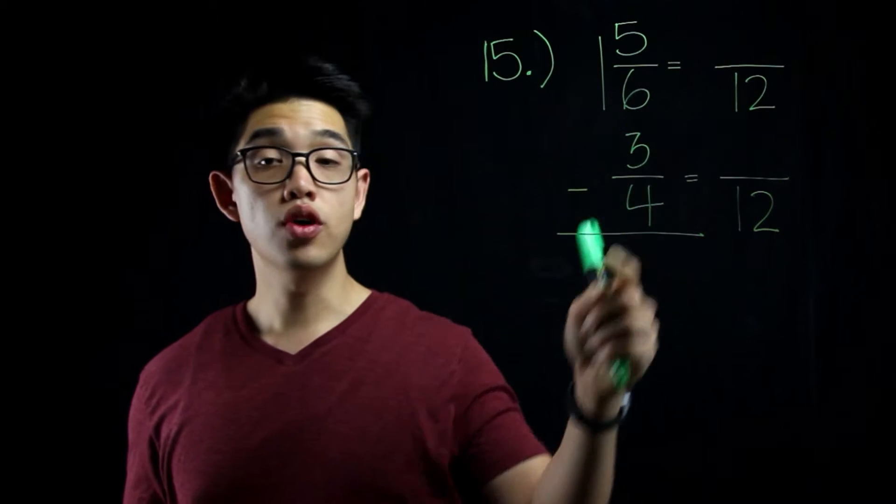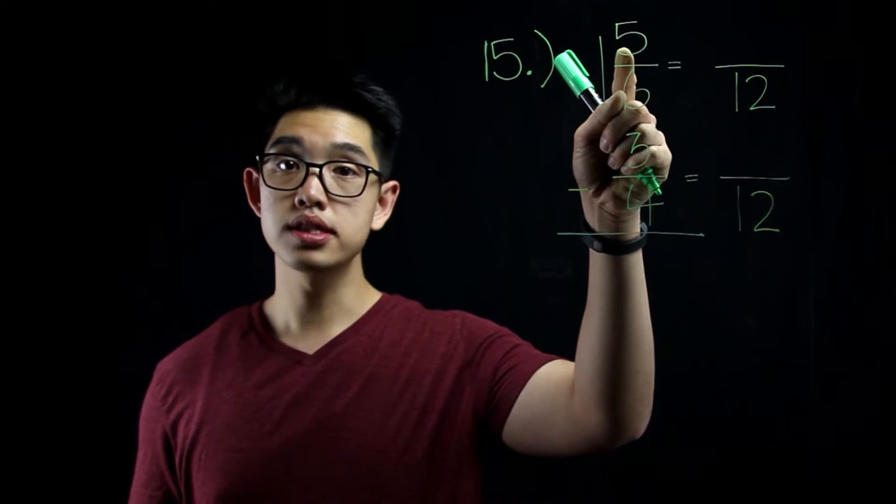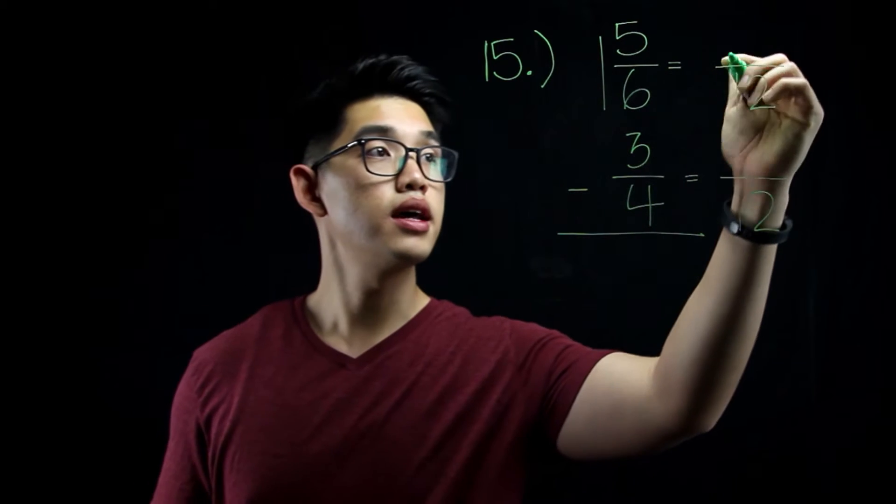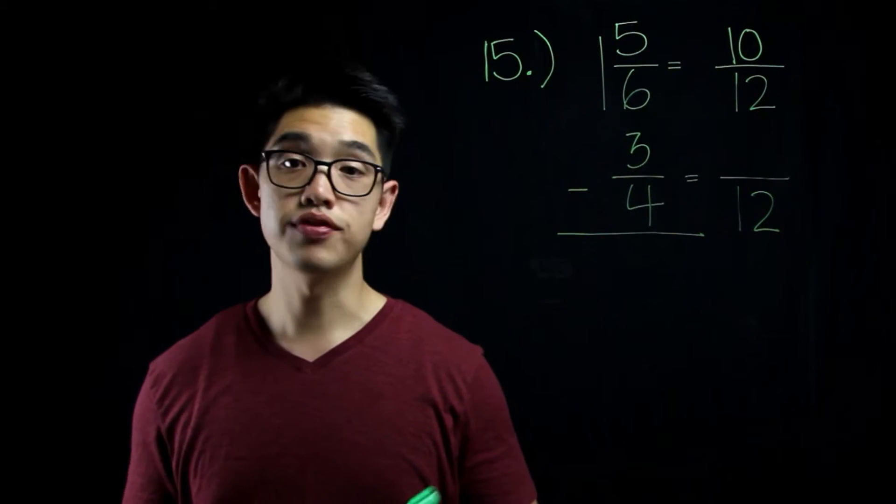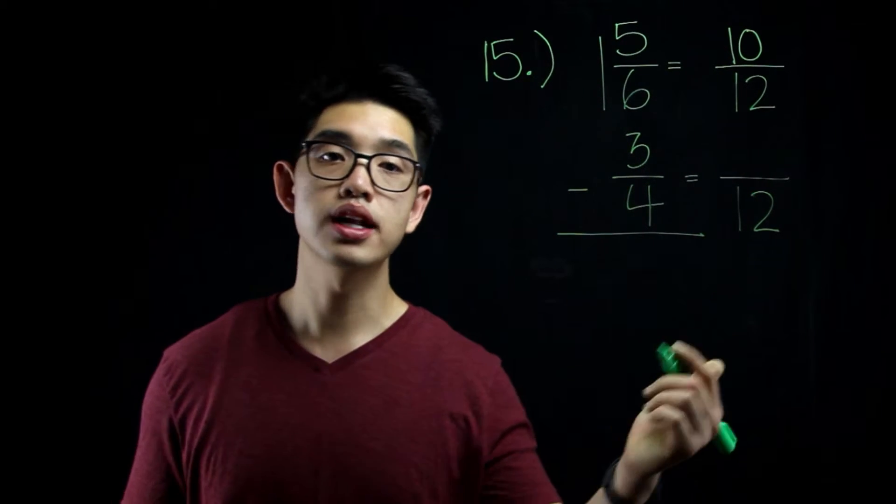Since 6 became 12 by multiplying by 2, I'm going to do the same thing on top. 5 times 2 equals to 10. 4 became 12 because I multiplied by 3, so if I do the same thing to the numerator, 3 times 3, that equals to 9.